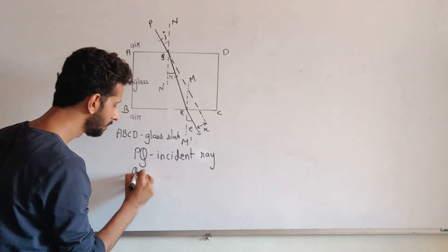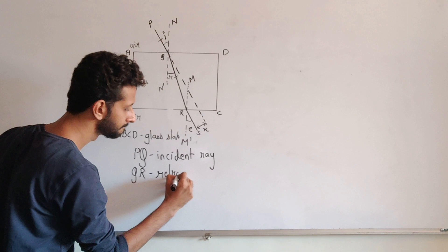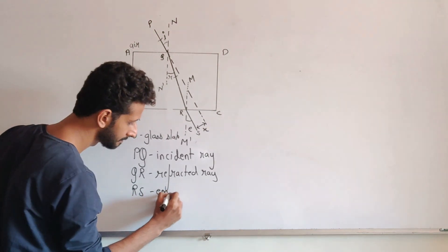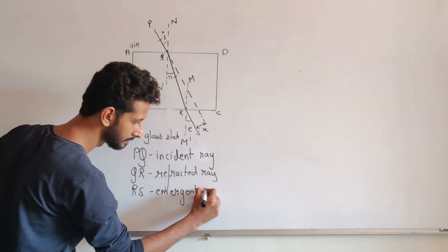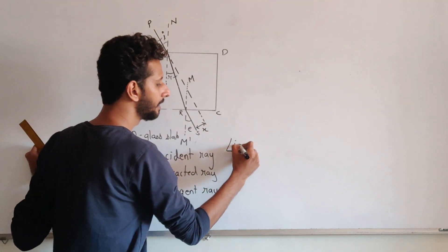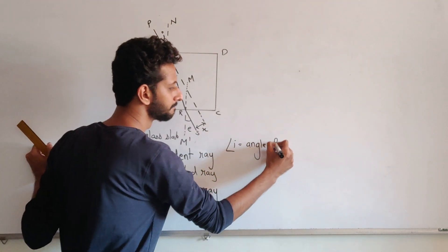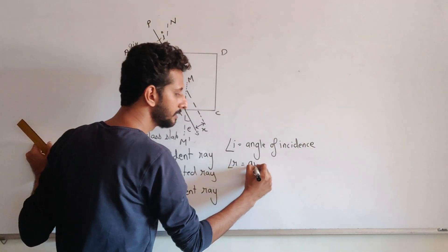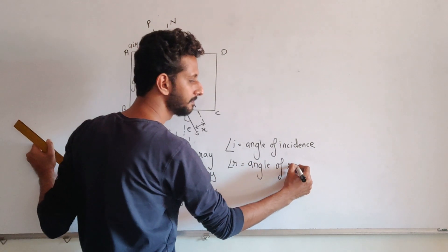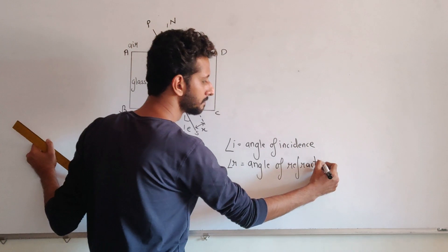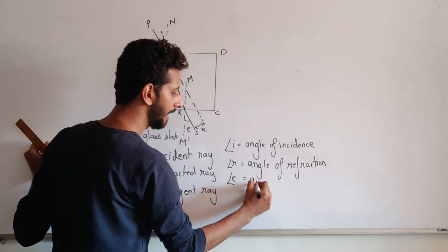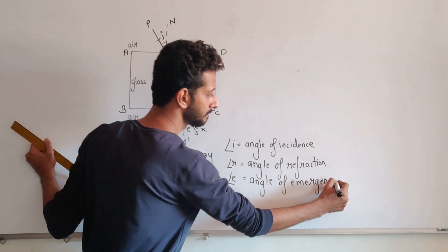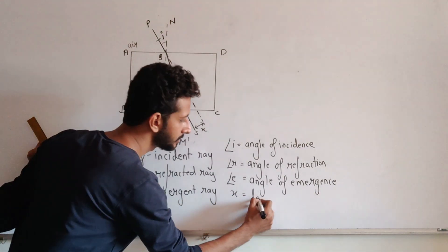So PQ is the incident ray, QR is the refracted ray, RS is the emergent ray, angle i is the angle of incidence, angle r is the angle of refraction, angle e is the angle of emergence, x is your lateral displacement.